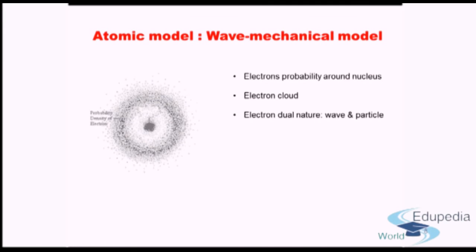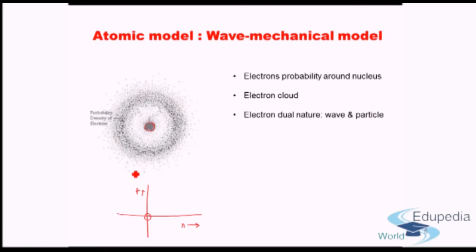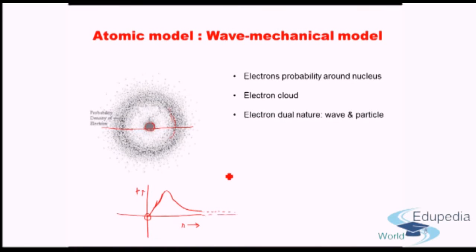The wave mechanical model arises from the idea that an electron has a dual nature — it can behave as both a wave and a particle. Looking at the probability distribution: very close to the nucleus, the probability of finding the electron is nearly zero. The probability rises and reaches a maximum near what is known as Bohr's radius, then decreases again, tending to zero at infinity. So there is a small but nonzero probability of finding the electron at very large distances.